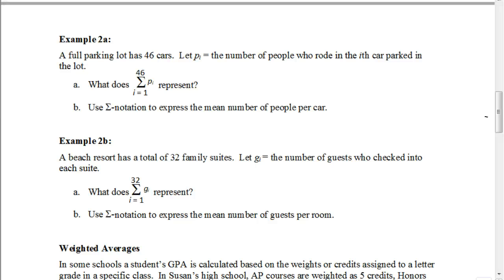So here it says a full parking lot has 46 cars. Let p sub i be the number of people who rode in the i-th car parked in the lot. So we want to figure out, well, what does this represent? What does that symbol represent? i equals 1 in the bottom there, 46 on the top using p sub i. So what this represents is this is the total number of people who rode in the cars parked in the lot. So again, the reason why it's a total is because this sigma represents the sum. So we're finding the sum of all those numbers. So p sub i, again, represents the number of people who rode in the... So there might have been five people that rode in one car and two people that rode in another. We have no idea because we don't have that table in front of us.